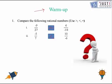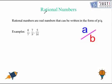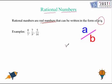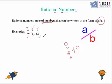Now we move ahead and we are going to learn about what is a rational number. Rational numbers are real numbers that can be written in the form of P over Q, where the denominator Q is always not equal to 0. Some examples for this would be 4 over 7, 7 over 9, and 9 over 16.